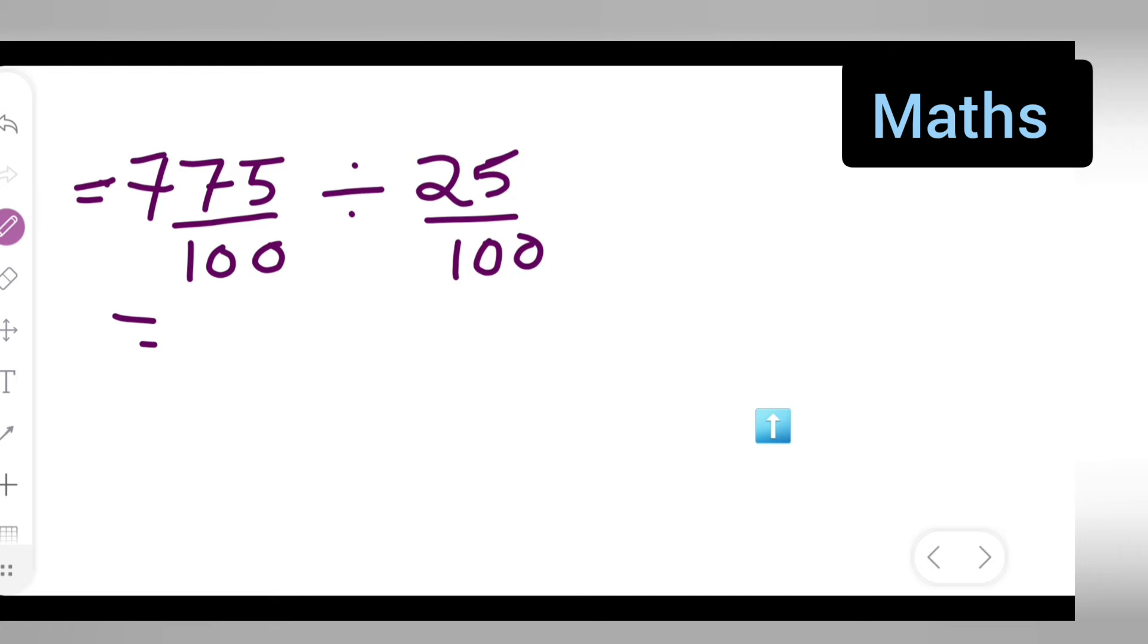So here what y'all are going to do is 7.75 upon 100 multiplied by 100 upon - what is there? This will be reciprocal. You will multiply this with the reciprocal of this. You are going to multiply this with this one.